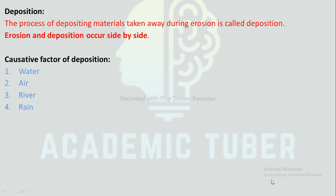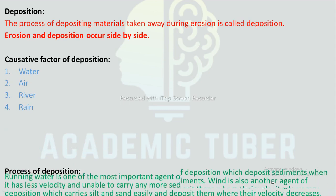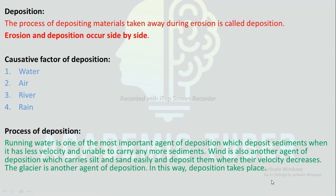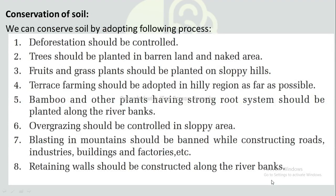Deposition: The process of depositing materials taken away during erosion is called deposition. Erosion and deposition occur side by side. Causative factors of deposition include water, air, rivers, and rain. Running water is one of the most important agents of deposition — it deposits sediments when its velocity decreases. Wind carries leaves and sand and deposits them where its velocity decreases. Glaciers are also agents of deposition.